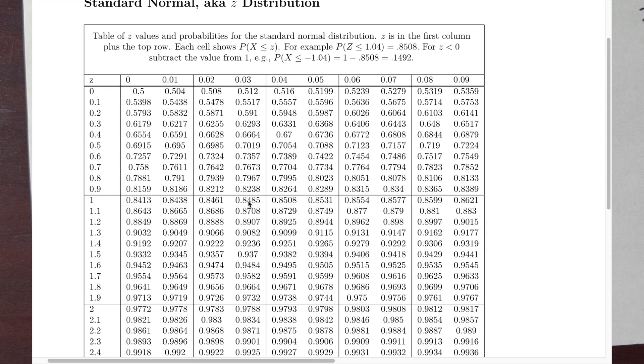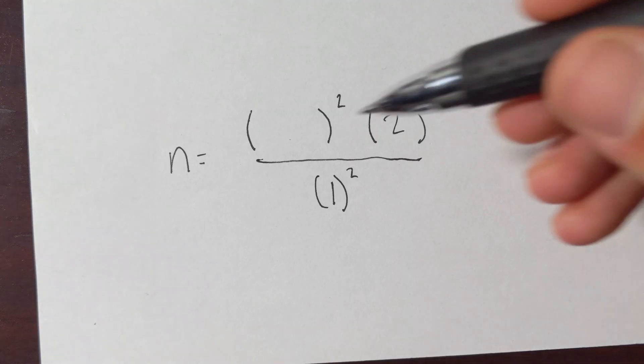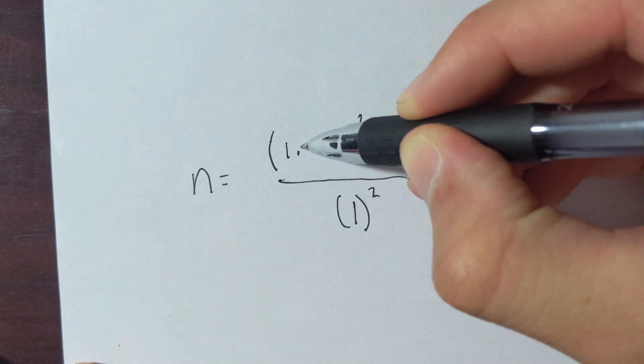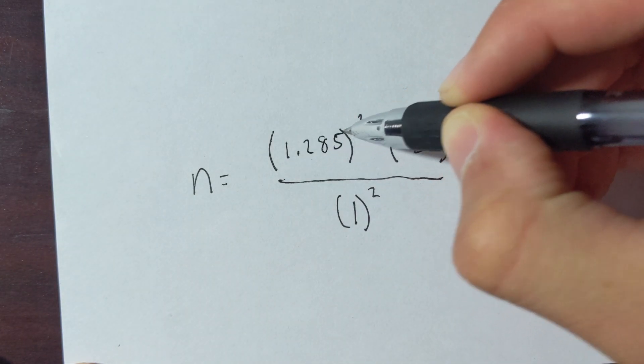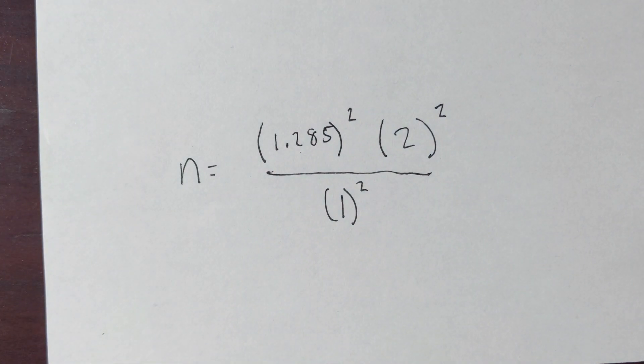Therefore, the z value you're looking in is the one minus 0.1, which is 0.9. So that's why these are not exactly accurate. You could use Excel if you wanted a perfectly accurate result, but we could round this to 1.285, because it's somewhere between 1.28 and 1.29. So we'll say 1.285. And now let's plug all of this into our calculator.